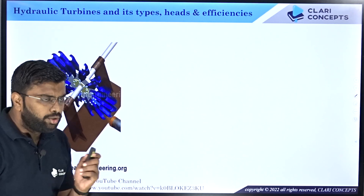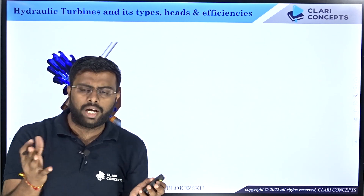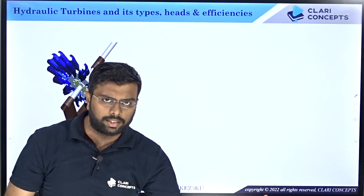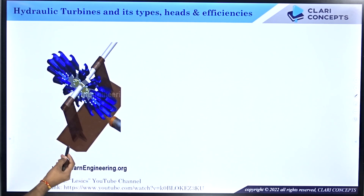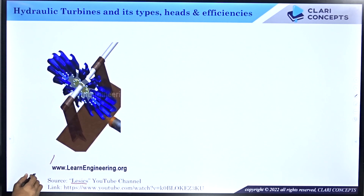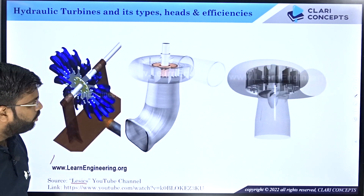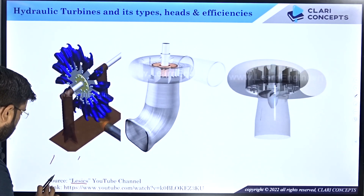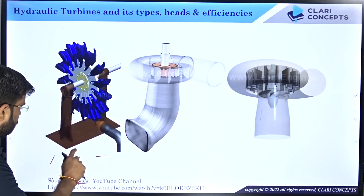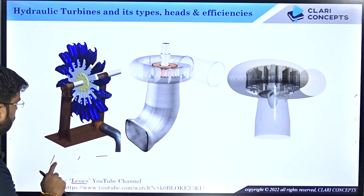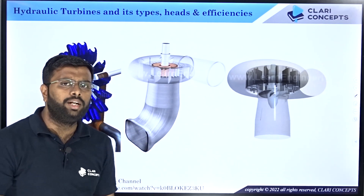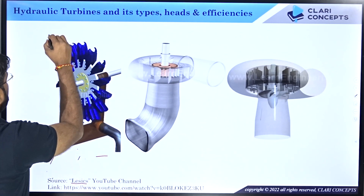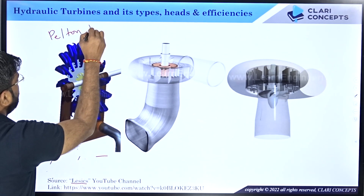Now generally, a turbine is a unit which converts hydro energy into mechanical energy. There are different types of turbines. For high head power generation we use the Pelton turbine. I will show an animation video to explain the different turbine types.